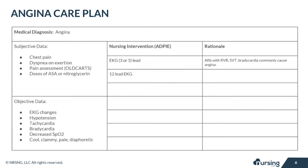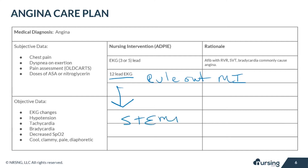Another nursing intervention will include a 12-lead EKG to rule out an MI. It takes 5 to 15 minutes to determine if chest pain will be relieved by nitroglycerin. So by checking a 12-lead, a possible STEMI can be ruled out immediately. If your patient does in fact have a STEMI, the patient must go to the cath lab stat.